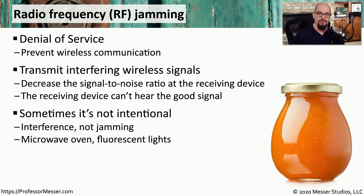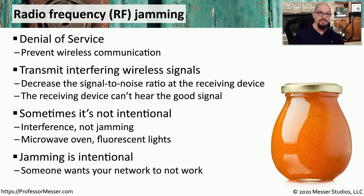Sometimes this disruption of the signal is not intentional. It could be that someone has turned on a microwave oven, and the oven is sending interference that's causing the signal not to be received by the stations. But of course, if this is some type of attack, then someone maliciously may be sending additional noise onto the network to prevent someone else from receiving that wireless signal.